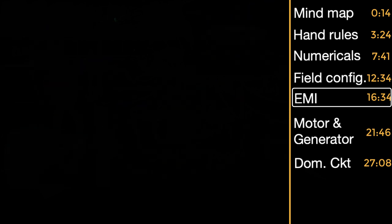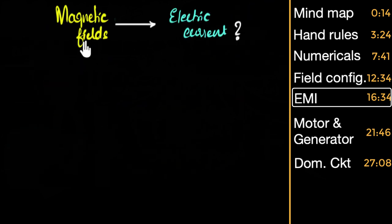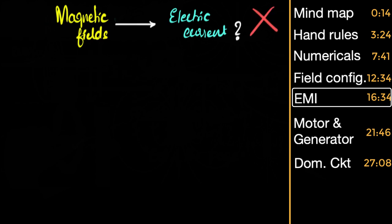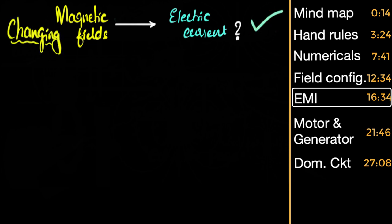Can magnetic fields produce electric current? When it comes to physics, we need to be very careful about wording. If somebody asks: can magnetic field generate electric current? The answer is no — magnetic fields cannot produce electric current. But changing magnetic fields, it turns out, can produce electric current. This is the whole idea of electromagnetic induction: if you want electric current, you need to have a changing magnetic field.